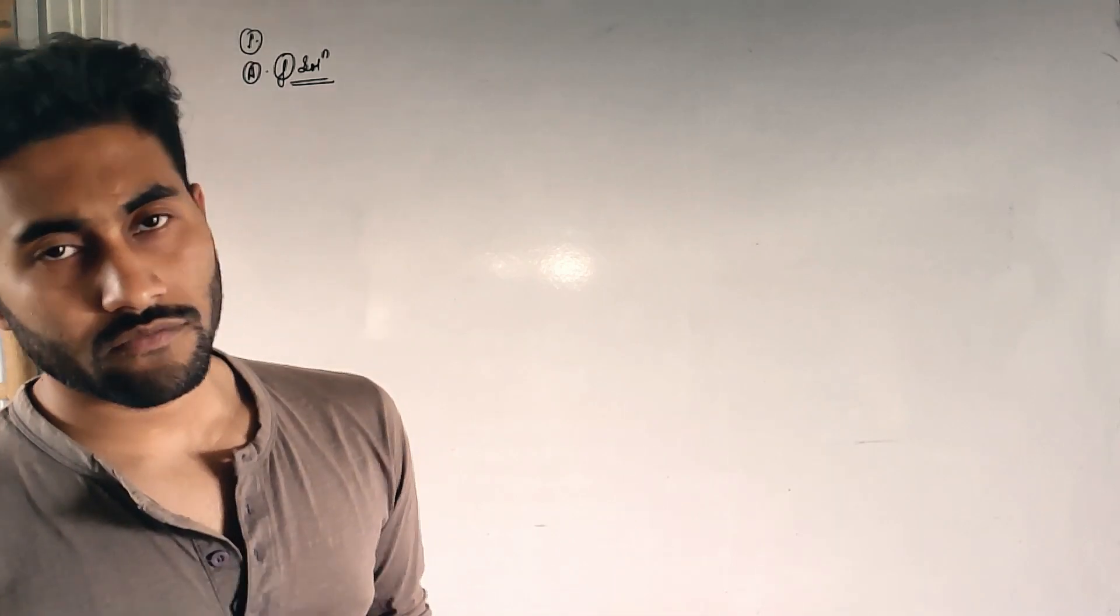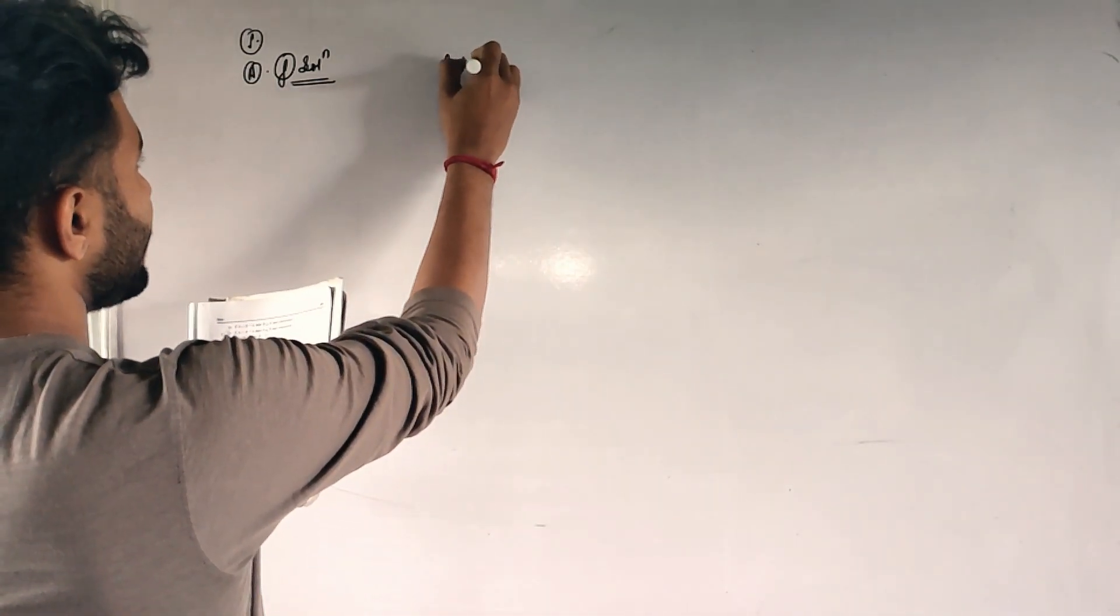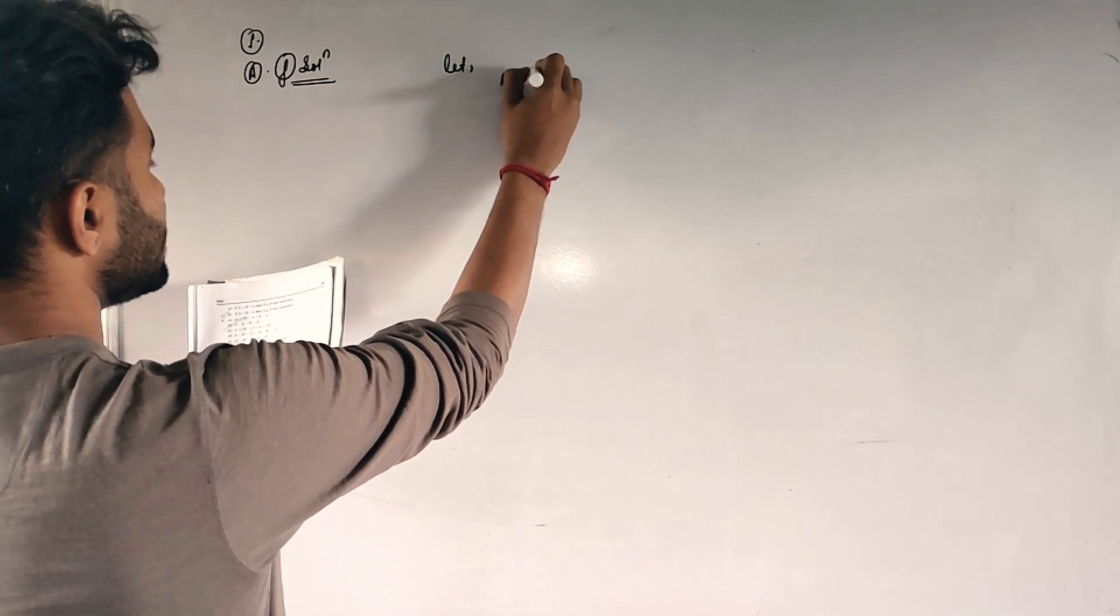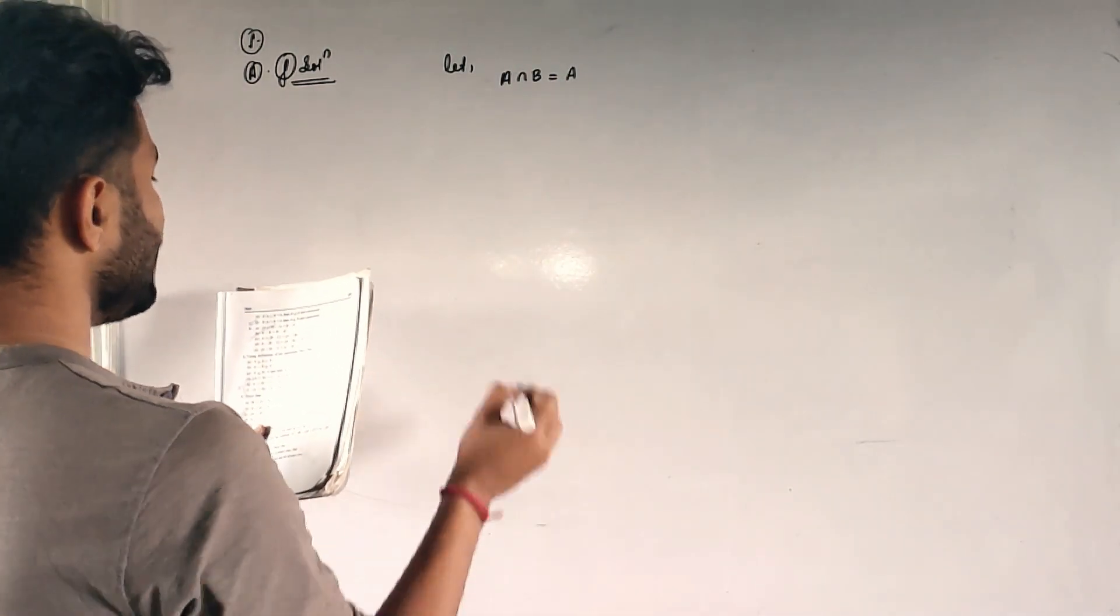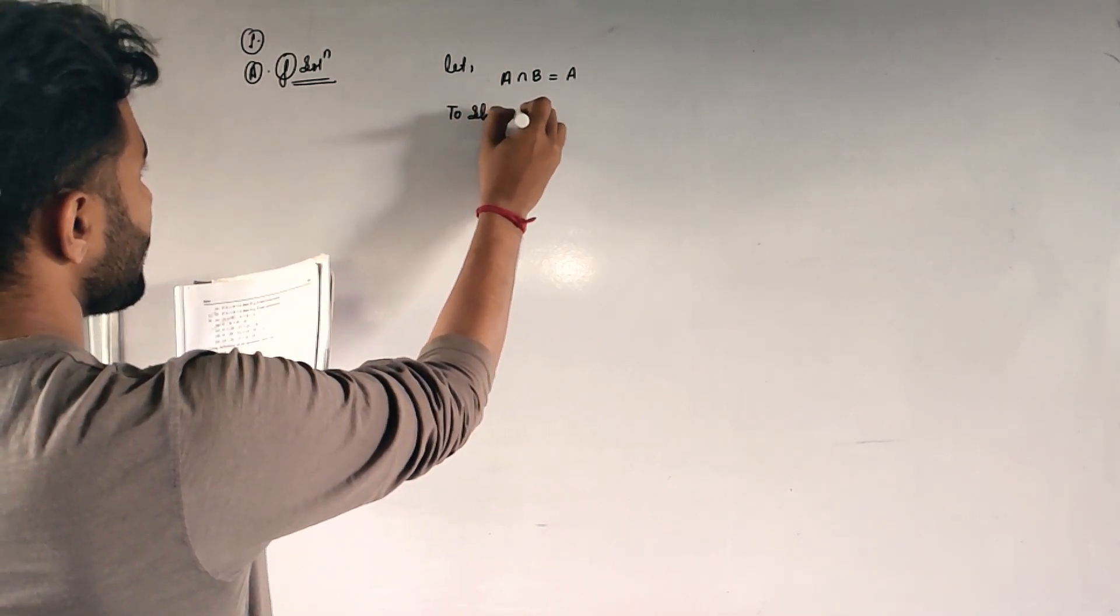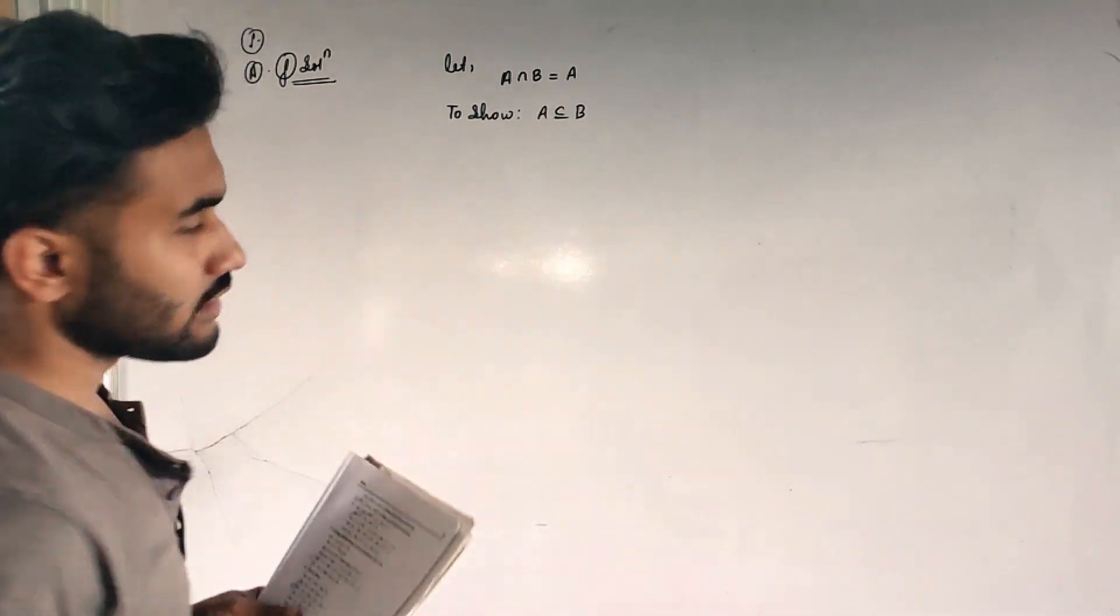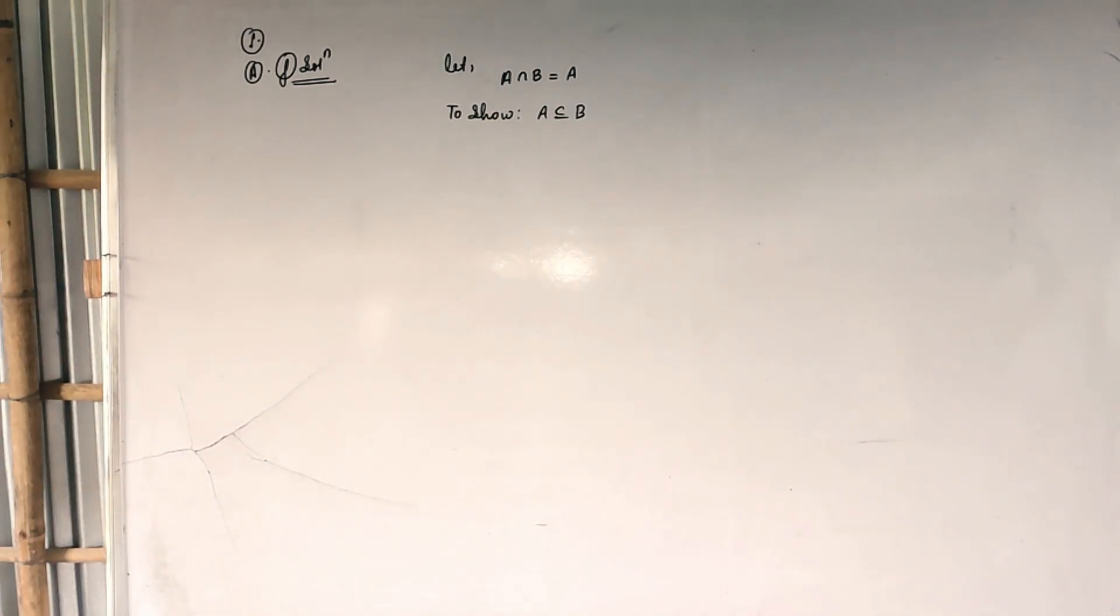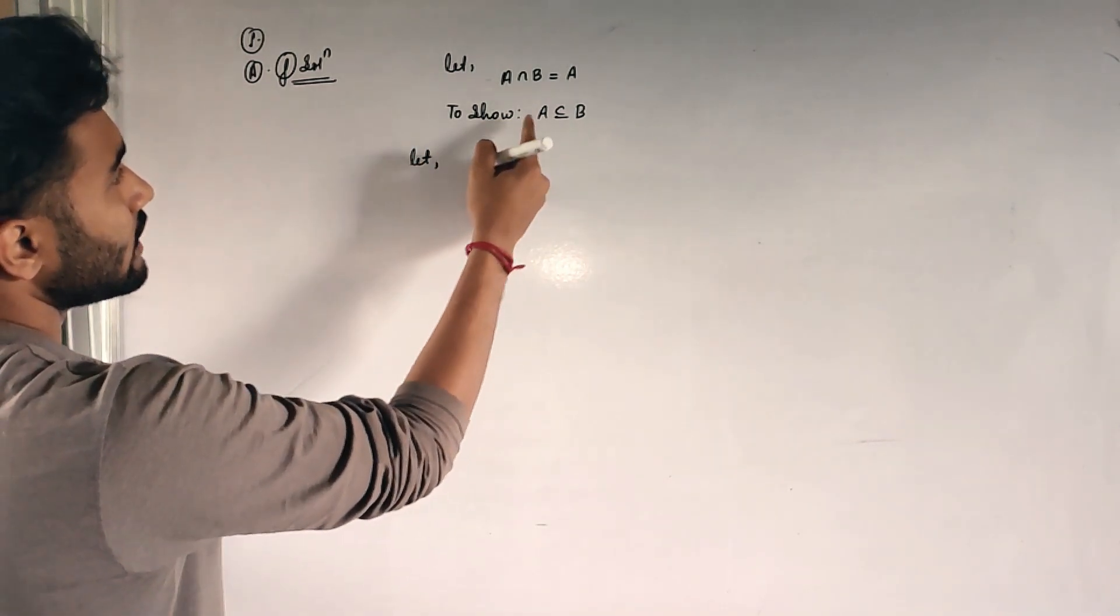What is given? If A intersection B is equal to A, then we have to show that A is a subset of B, and then we have to prove it conversely also. So let us assume, at first let A intersection B will be equal to A. Let, and I have to show, to show A is a subset of B.